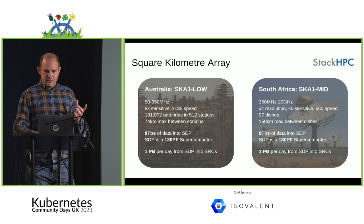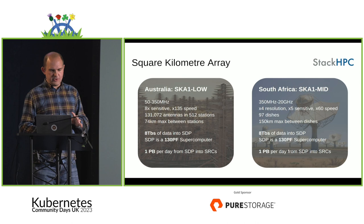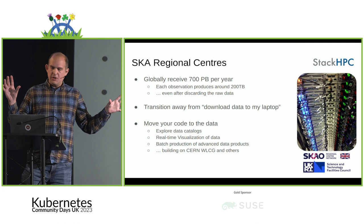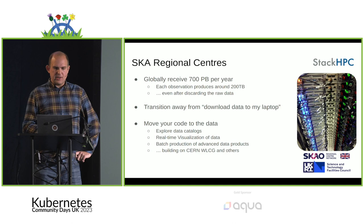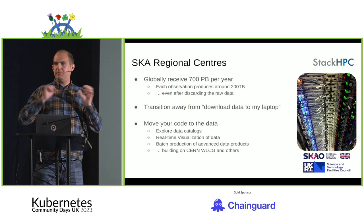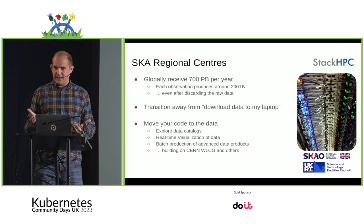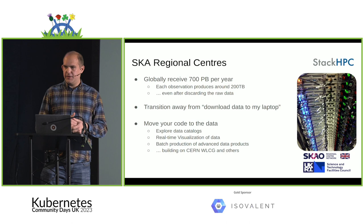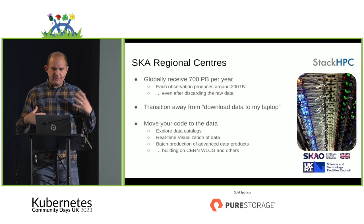We haven't actually done the science bit yet — this is just getting the data in and reducing signals down to the artifacts that scientists can work on. That data then needs to be globally distributed to where the computers live across the globe to actually do and analyze the science. Over that 50-year lifespan, that's about 700 petabytes a year distributed globally. For those who've heard talks on CERN and the WLCG, this will sound familiar — this global collaboration is modelled on the same thing.